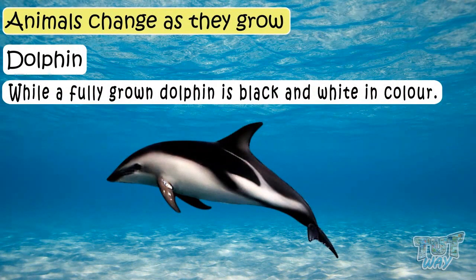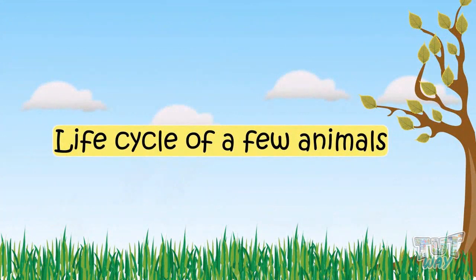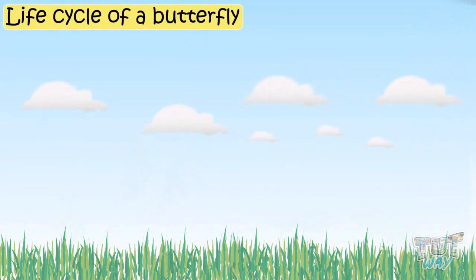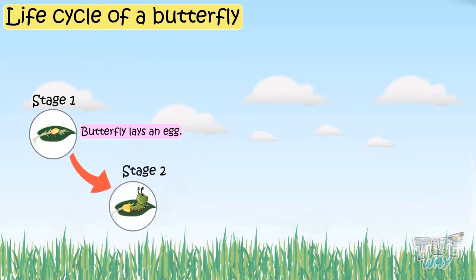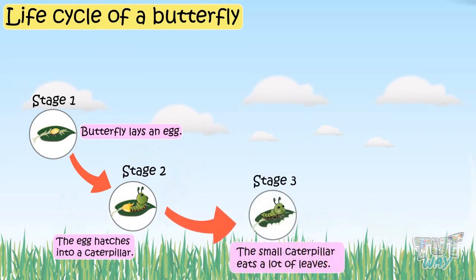Now let's see the life cycle of some animals. First, let's look at the life cycle of a butterfly in stages. In stage one, the butterfly lays an egg. In stage two, the egg hatches into a caterpillar. In stage three, the small caterpillar eats a lot of leaves and grows into a bigger caterpillar.